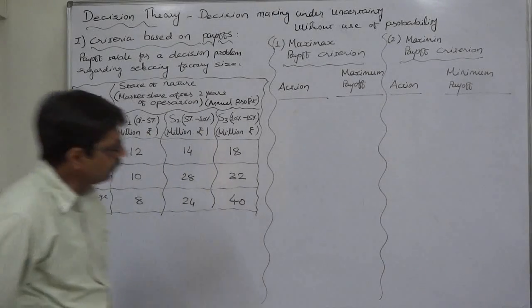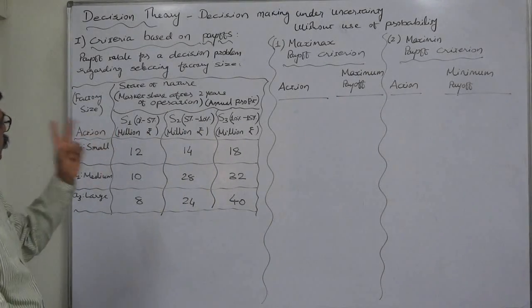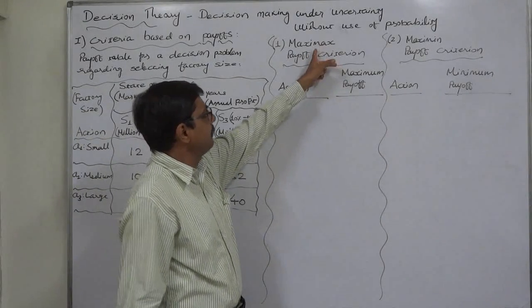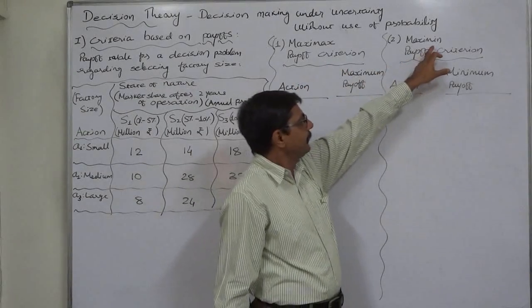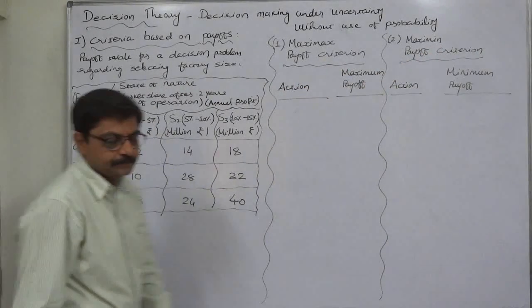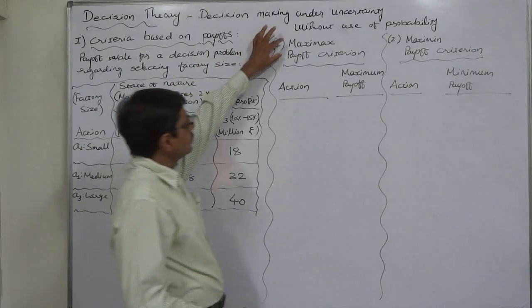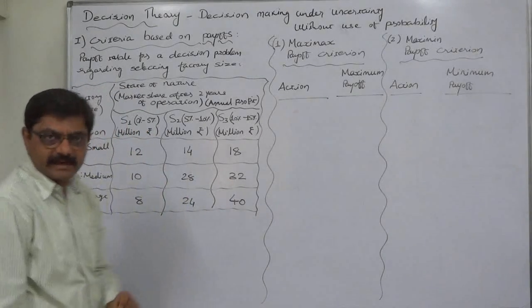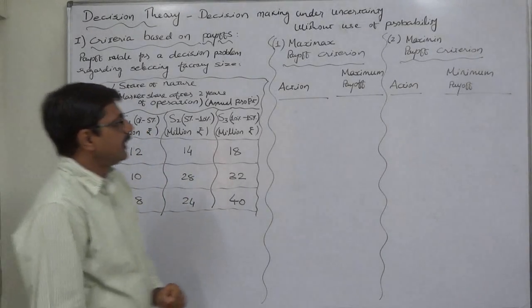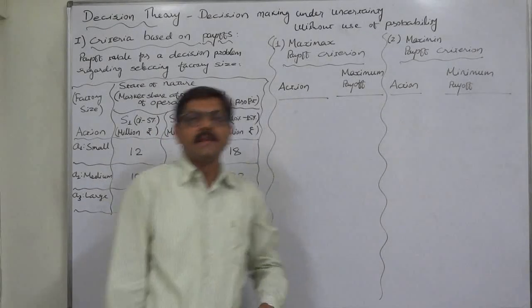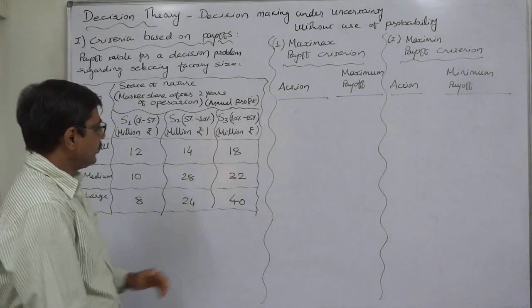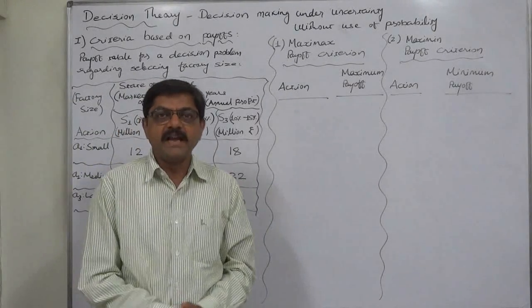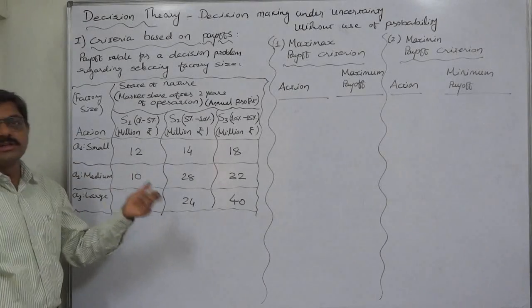First of all in this lecture we are going to discuss two main payoff criteria: they are maximax payoff criterion and maximin payoff criterion. Maximax is a term, actually short form of maximum of maximum, that means highly positive attitude of decision making. The decision maker, the management of the company, wants highest possible profit.